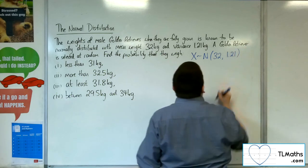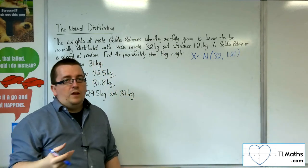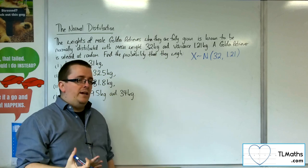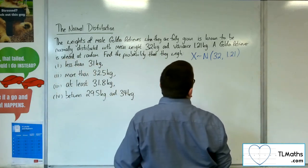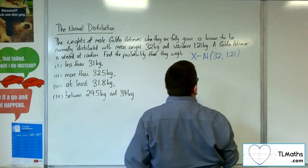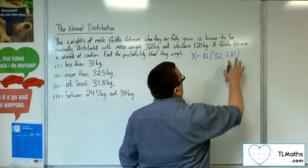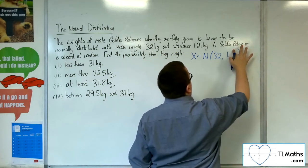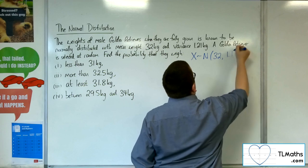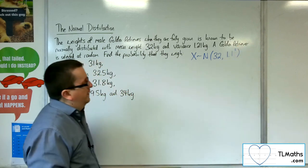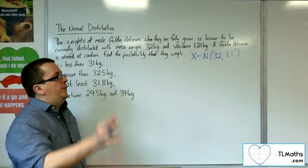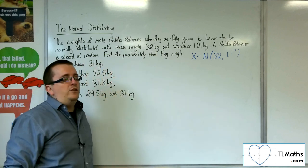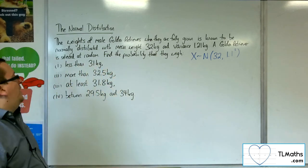Now we know that the variance isn't something that we have been using much. We use the standard deviation. So really we want to square root 1.21 and the square root of 1.21 is 1.1. So the standard deviation is 1.1, whereas the variance is 1.1 squared, 1.21. So a little thing to keep an eye on there, just in case you get caught out.